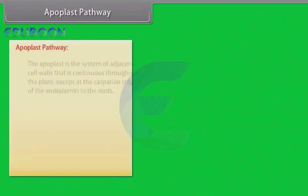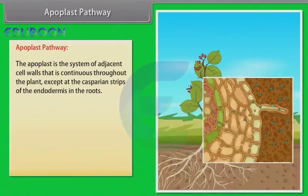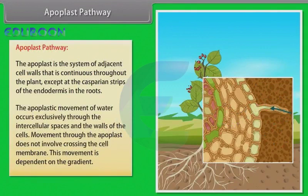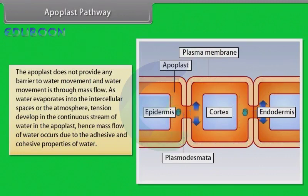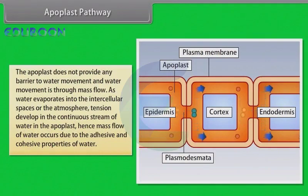The apoplast is the system of adjacent cell walls that is continuous throughout the plant, except at the Casparian strips of the endodermis in the roots. The apoplastic movement of water occurs exclusively through the intercellular spaces and the walls of the cells. Movement through the apoplast does not involve crossing the cell membrane — this movement is dependent on the gradient. The apoplast does not provide any barrier to water movement, and water movement is through mass flow. As water evaporates into the intercellular spaces or the atmosphere, tension develops in the continuous stream of water in the apoplast, and mass flow of water occurs due to the adhesive and cohesive properties of water.